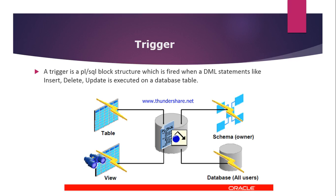If you are creating a trigger on a table or view, the triggering event will be composed of DML statements — this is called a DML trigger. As you can see in this diagram, we have table, schema, view, and database. When you create a trigger on a table or view, it is called a DML trigger. When you create a trigger on a schema or database, it is called a system trigger.